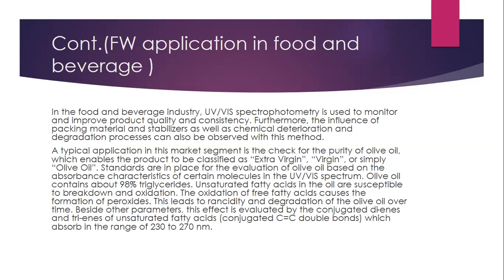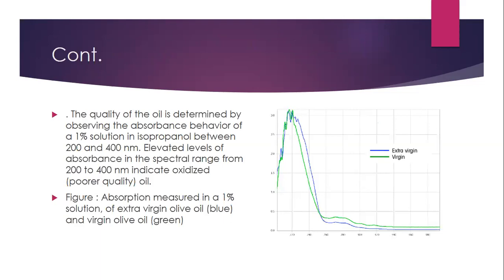Olive oil contains about 98% triglycerides. The unsaturated fatty acids in the oil are susceptible to breakdown and oxidation. The oxidation of free fatty acids causes the formation of peroxides, which leads to rancidity and degradation of the olive oil over time. This effect is evaluated by the conjugated dienes and trienes of unsaturated fatty acids, which absorb in the range of 230 to 270 nanometers. The quality of oil is determined by measuring the absorbance of a 1% solution in isopropanol between 200 and 400 nanometers. Elevated absorbance in this range indicates oxidized oil; absorption of extra virgin oil is shown in blue and virgin oil in green in the figure.